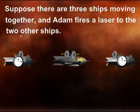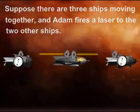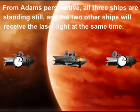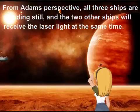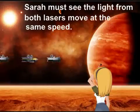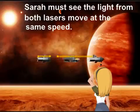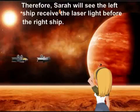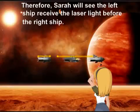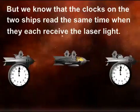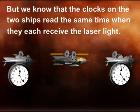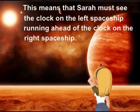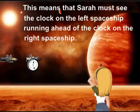Suppose there are three ships moving together, and Adam fires a laser to the two other ships. From Adam's perspective, all three ships are standing still, and the two other ships will receive the laser light at the same time. Sarah sees the light from both lasers move at the same speed. Therefore, Sarah will see the left ship receive the laser light before the right ship. But we know that the clocks on the two ships read the same time when they each receive the laser light. This means that Sarah must see the clock on the left spaceship running ahead of the clock on the right spaceship.